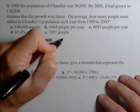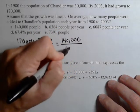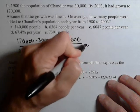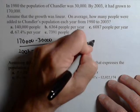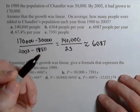So we are gonna get 140,000 over 23, which if you use your calculator to calculate, you're gonna get roughly 6,087 people per year.